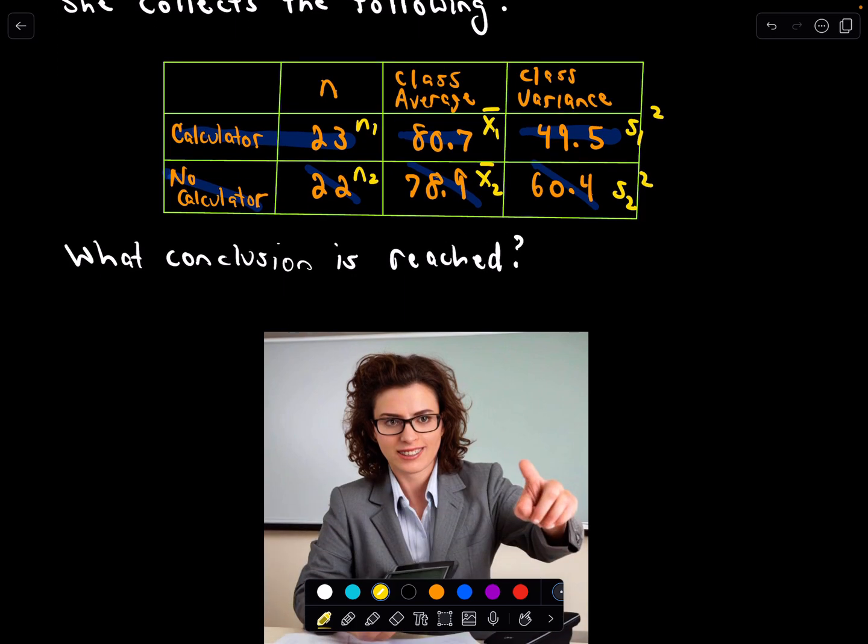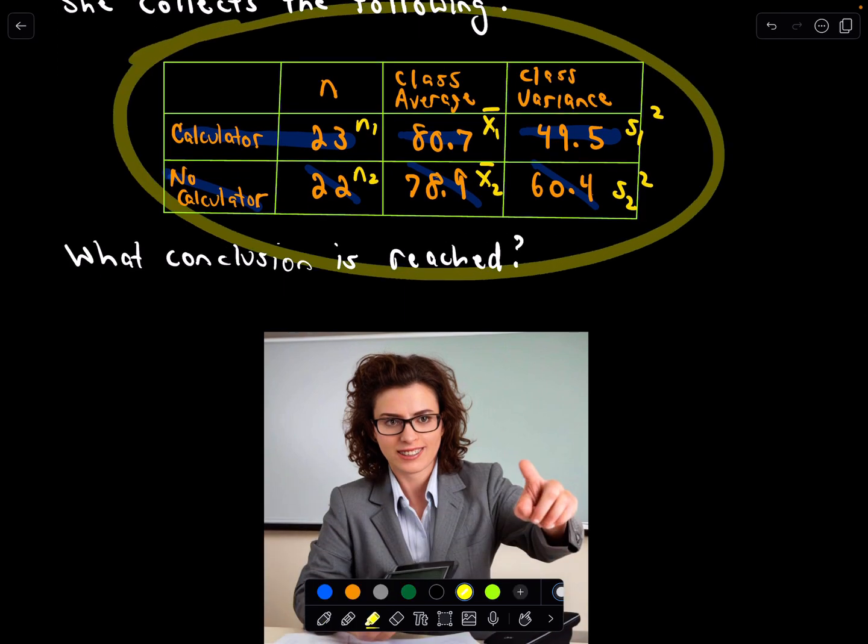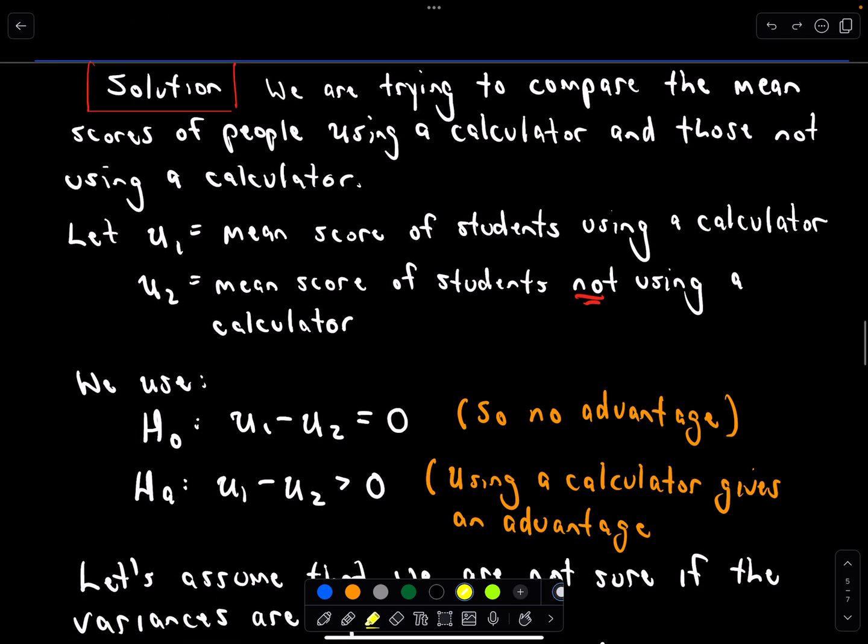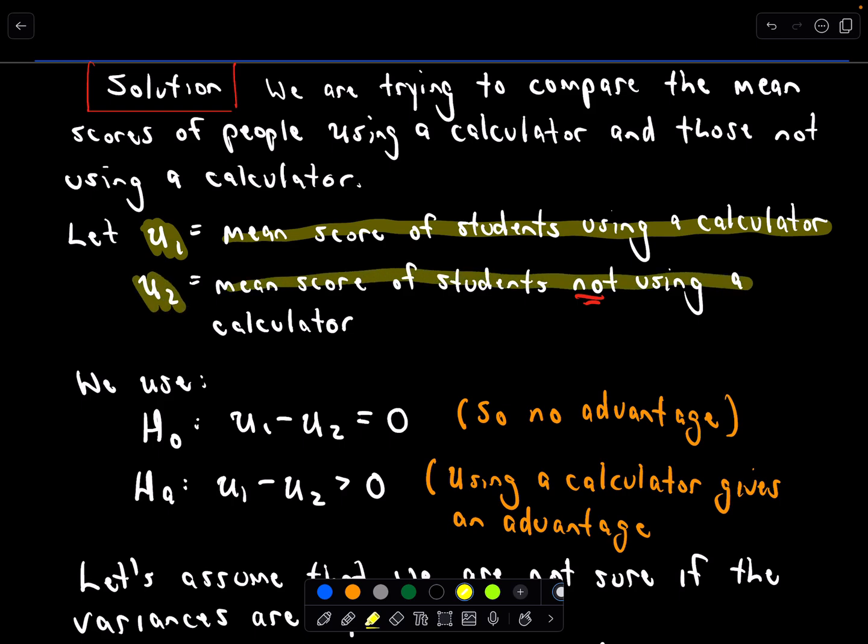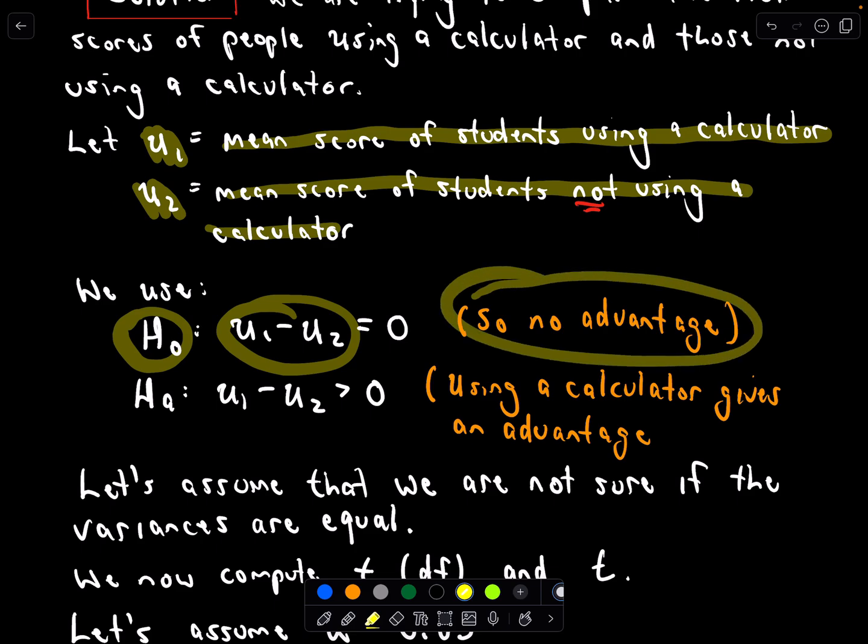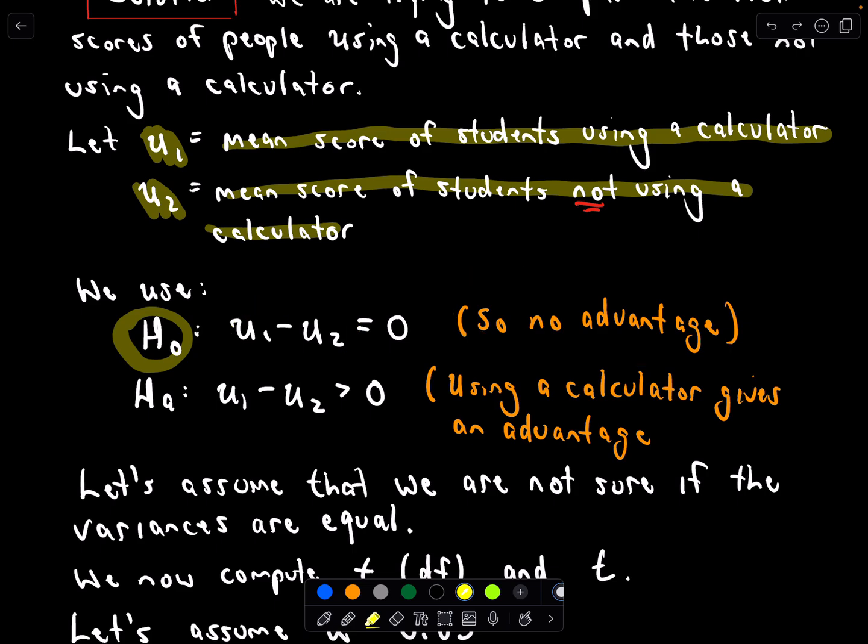So again the idea is we go out there, we collect this data, what do you say, does a calculator give you an advantage or not? That's the question. We're going to let μ1 be the mean score of the students using a calculator and we'll let μ2 be the mean score of the students not using a calculator. So our null hypothesis is that the difference of those two means equals zero, which means the mean scores are equal, which would tell us there's no advantage in using a calculator.